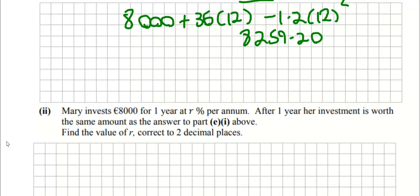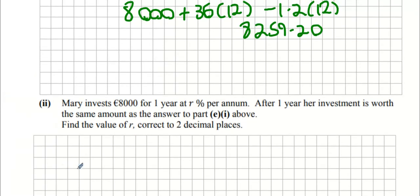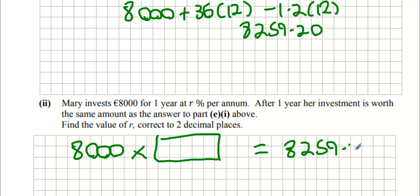This is tough. Mary invests 8000 for one year at R percent per annum. After one year her investment is worth the same as above. 8000 multiplied by some magical number that's above 1, just one year, power one. What do you do with the 8000 on the other side? Divide.